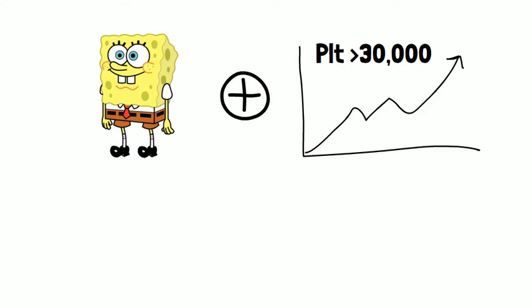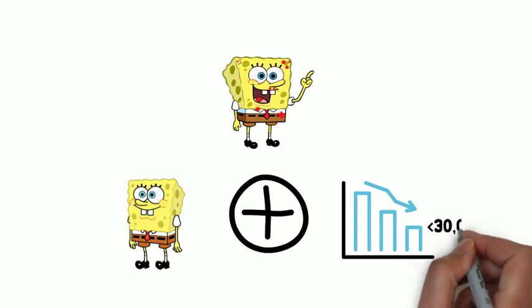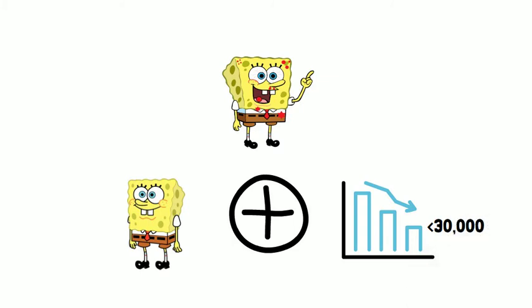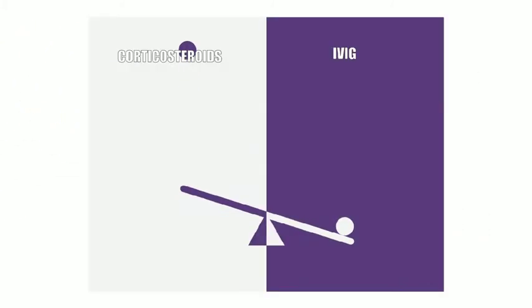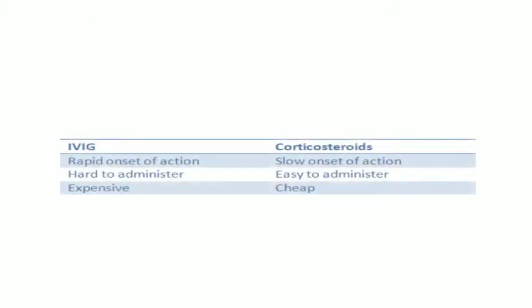No treatment is needed in category one. In category two, we have patients with minor mucosal bleeding or platelet counts less than 30,000. Treatment is required in this case. Either glucocorticoids or IVIG can be used — they have similar efficacy. IVIG works fast, but it is difficult to administer and expensive, so it is only used if rapid action is desired or if glucocorticoids fail.